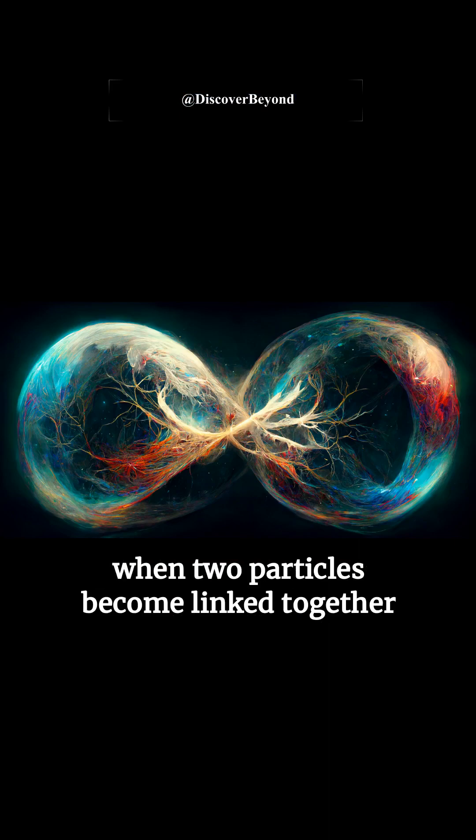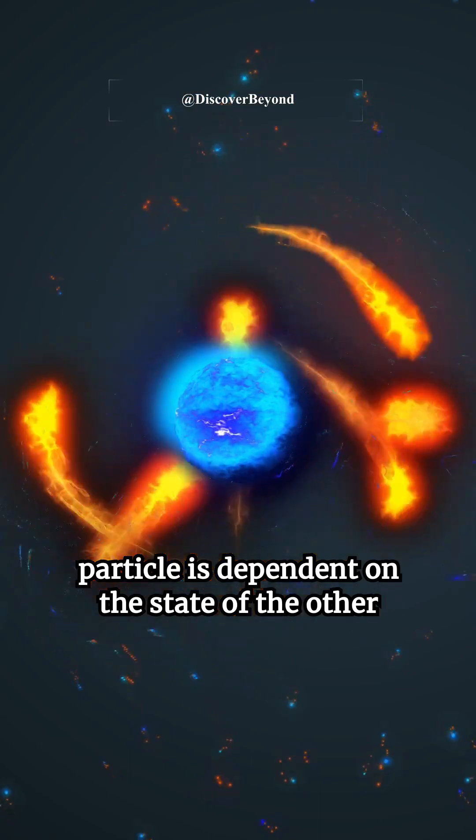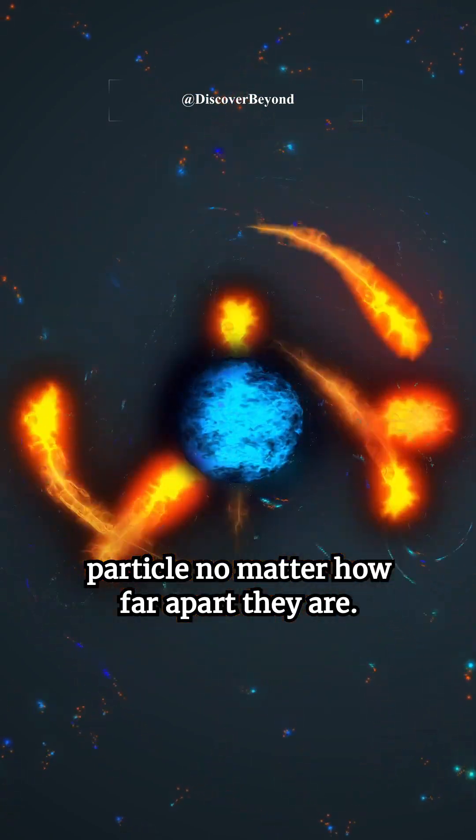Quantum entanglement occurs when two particles become linked together in such a way that the state of one particle is dependent on the state of the other particle, no matter how far apart they are.